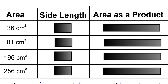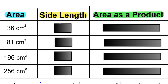In these examples, you'll be given the area of the square and we'll have to find out the side length and the area as a product. And remember, that product means multiplication.